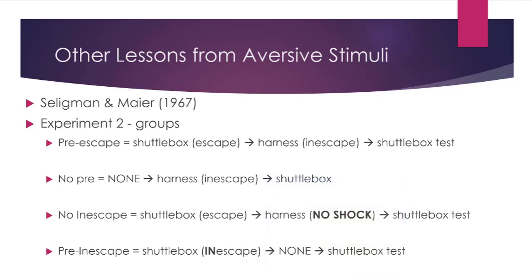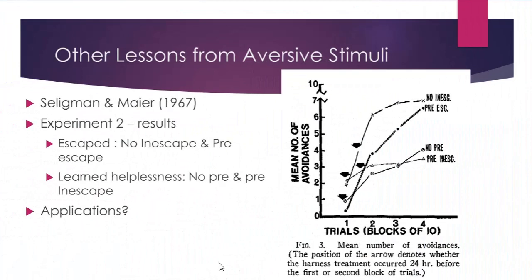Looking at Figure 3 — mean number of avoidances — if it's high, they're learning to escape the shock; if lower, they're not. The groups that never received inescapable shock, and the one that learned to escape initially, are learning to escape. Learning to escape initially sort of inoculates them — even if they're later exposed to inescapable shock, they learn to escape. But the other groups showed what's called learned helplessness: they're not learning to escape the shock even though now they can. The no-pre and pre-escape-inescapable groups are not learning to escape.